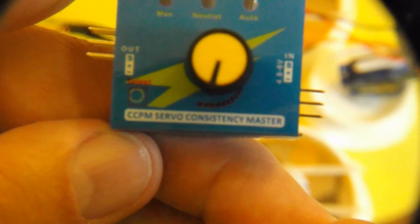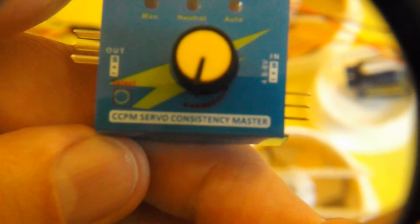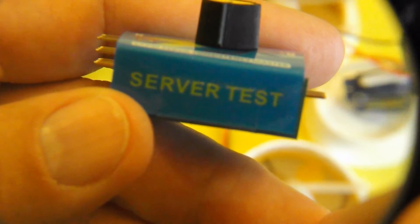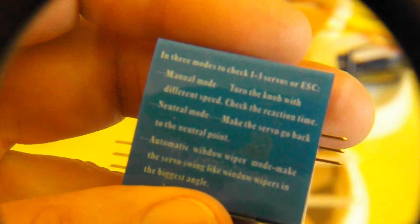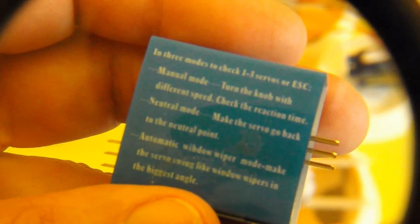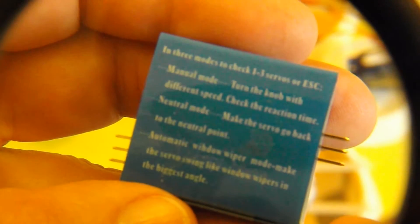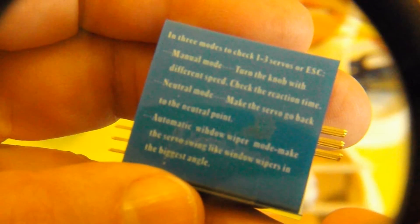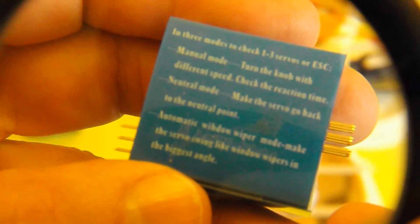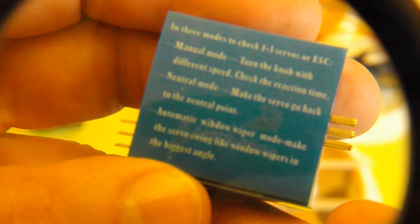CCPM Servo Consistency Master, or Servo Tester. Three modes: Manual mode, Neutral mode, and Automatic windscreen wiper mode or window wiper mode.